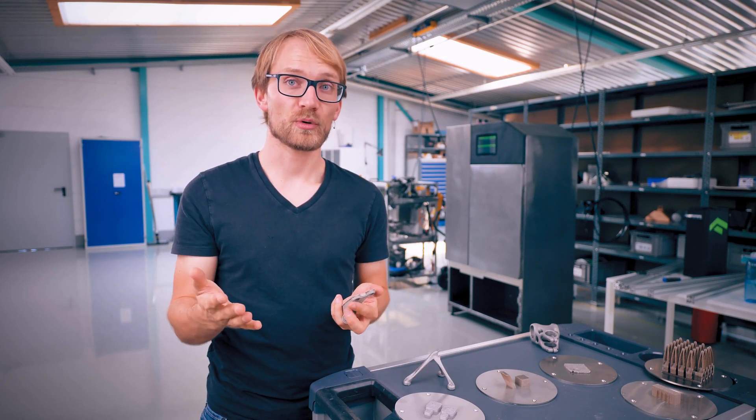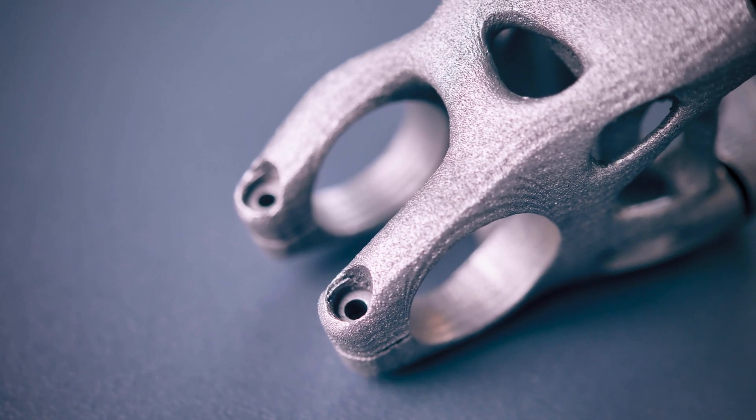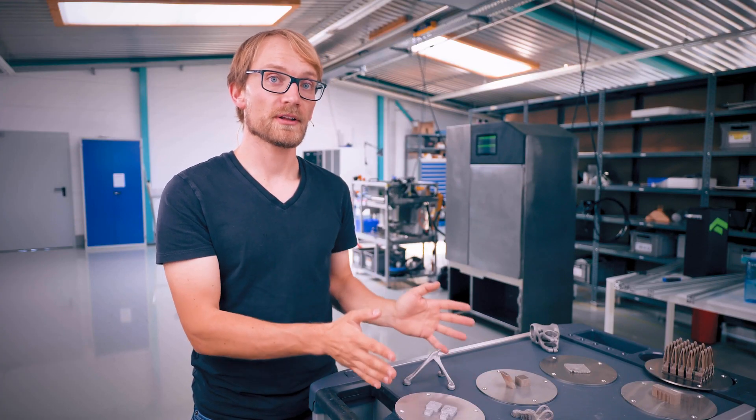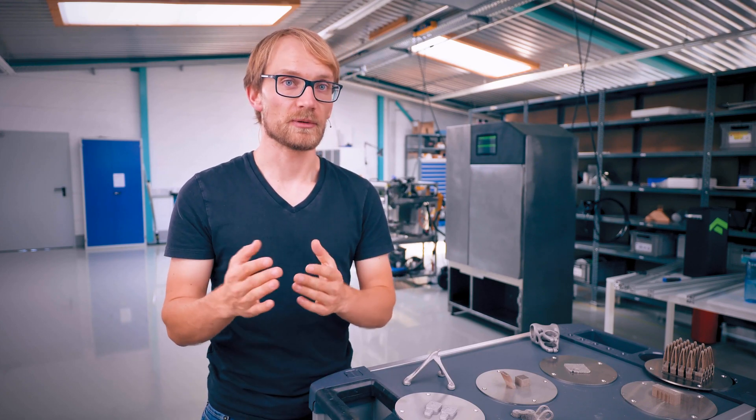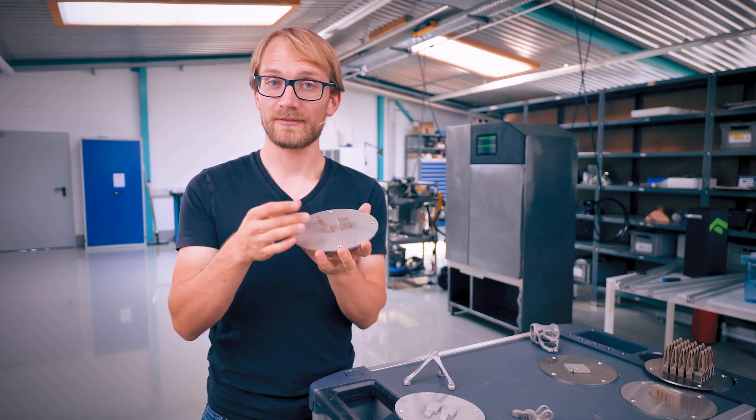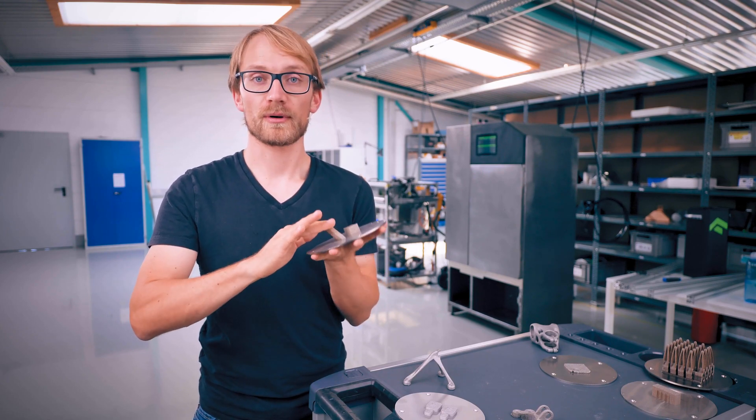But if there are straight bores, there's always the option to drill or even ream holes to size. Remember, these parts are all essentially solid metal, so they can be worked like a machined, solid part. Now, there are a few more advanced tricks and design rules that you should keep in mind for designing parts for metal printing.